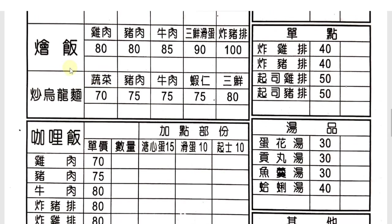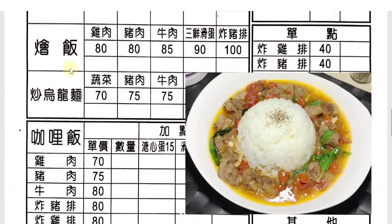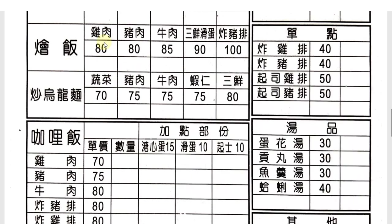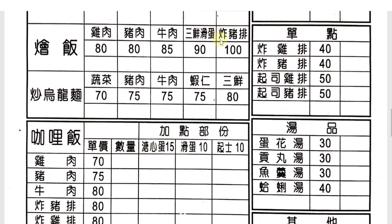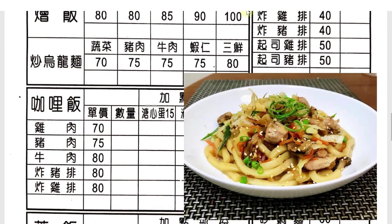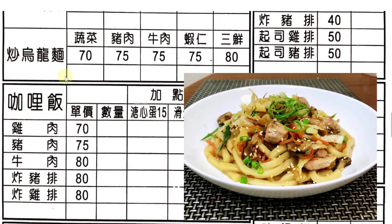滙飯 — I'll call it soupy rice; there's no direct English equivalent. The options are 雞肉 chicken, 豬肉 pork, and 牛肉 beef. 三鮮滑蛋 — 三鮮 is seafood and 滑蛋 is a silky, fluffy egg — it's quite good. 炸 which we learned from the previous video means deep-fry, and 豬排 is pork fillet, so 炸豬排 is deep-fried pork fillet. 炒烏龍麵 is fried udon — udon is a thick type of noodle originally from Japan.